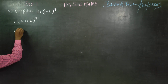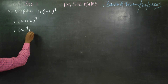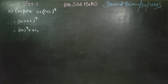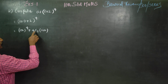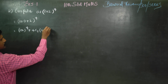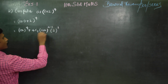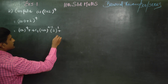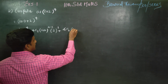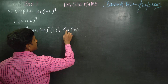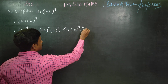Using the binomial theorem: (100 + 2)^4 = 100^4 + 4C1 × 100^(4-1) × 2^1 + 4C2 × 100^(4-2) × 2^2.